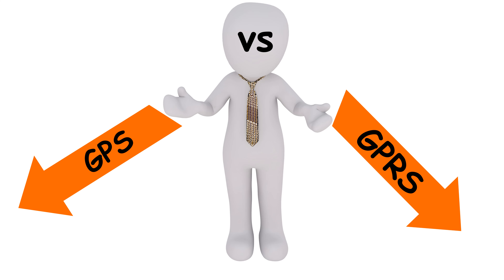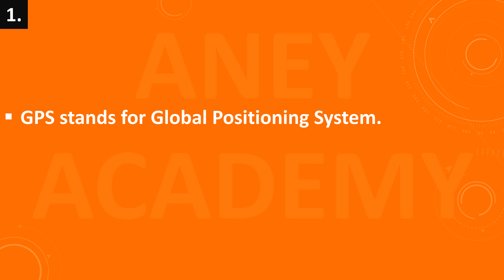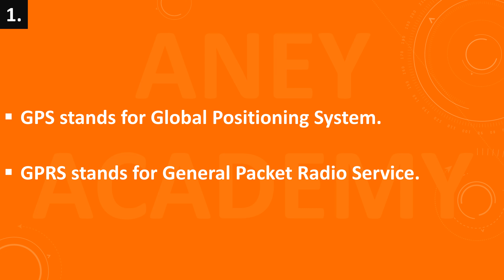Welcome back to another video of Inni Academy. In this video, we will discuss what is the basic difference between GPS and GPRS. GPS stands for Global Positioning System. GPRS stands for General Packet Radio Service.